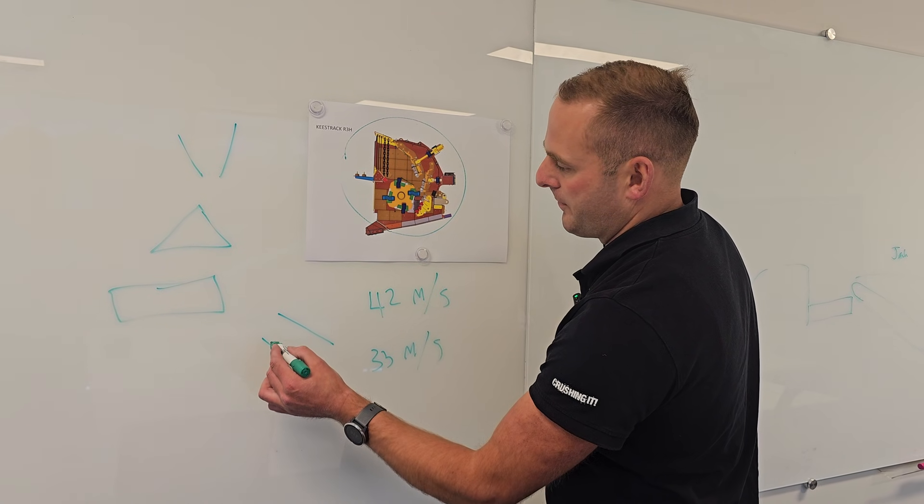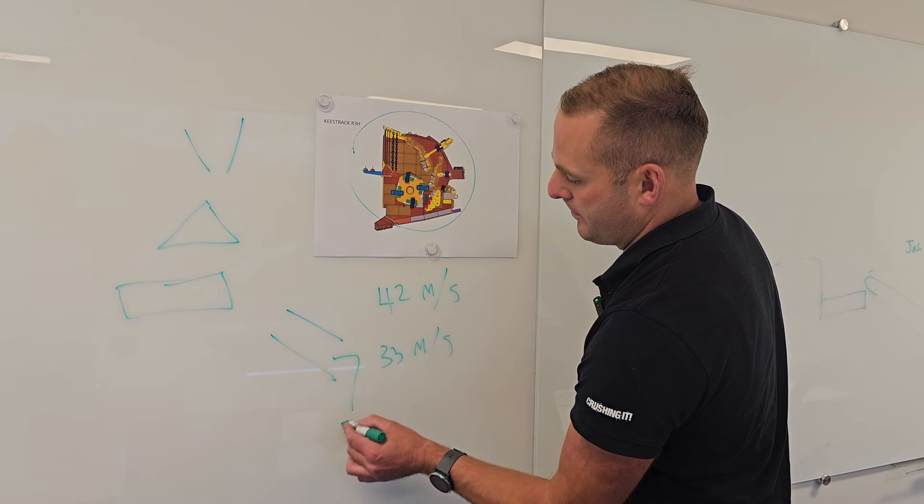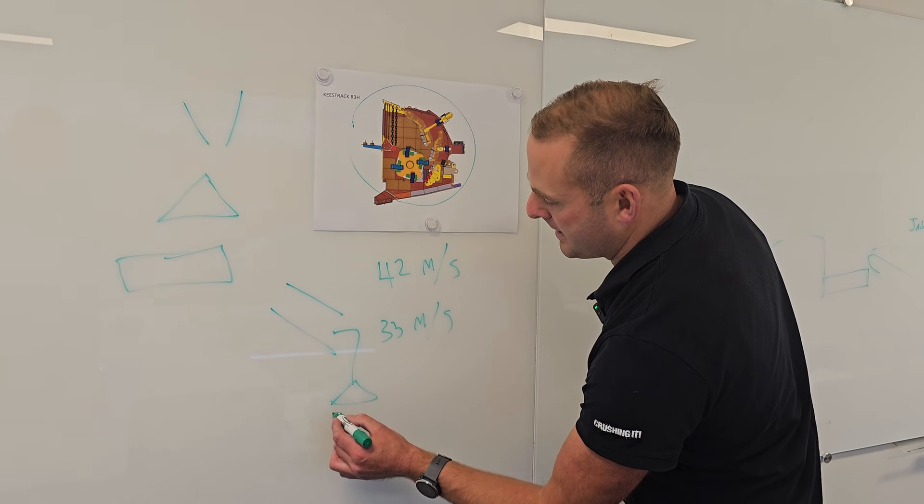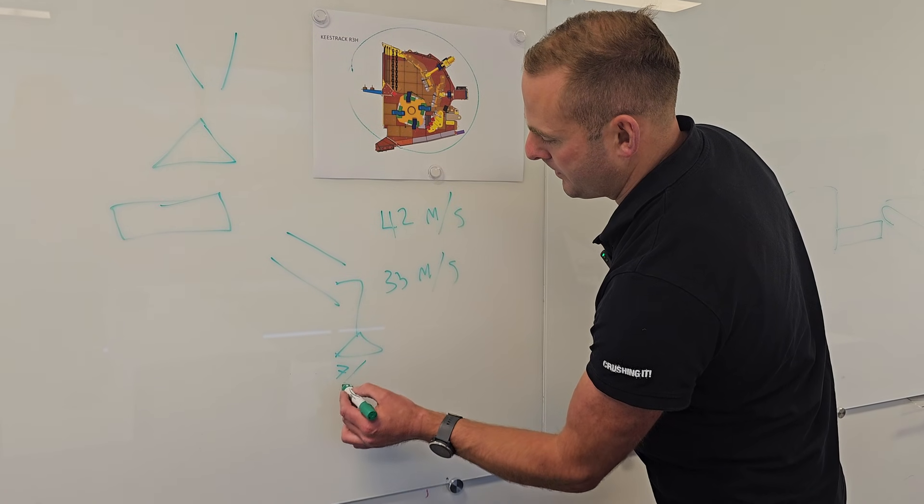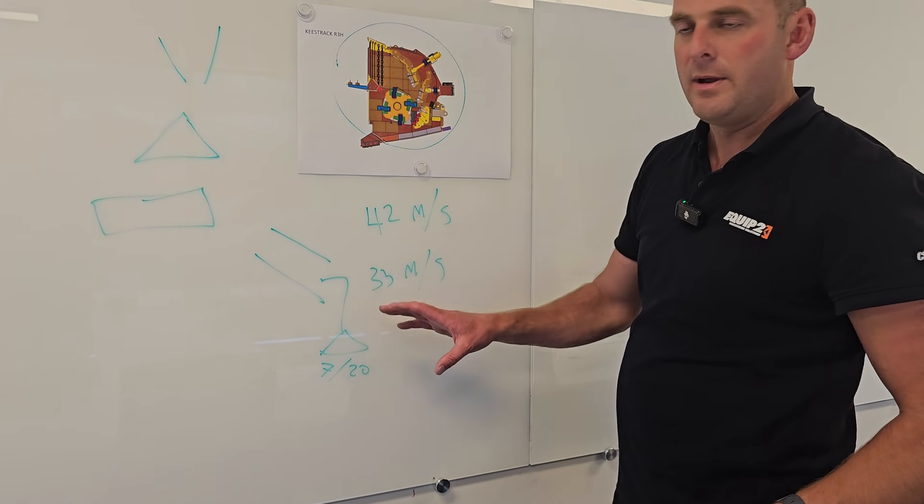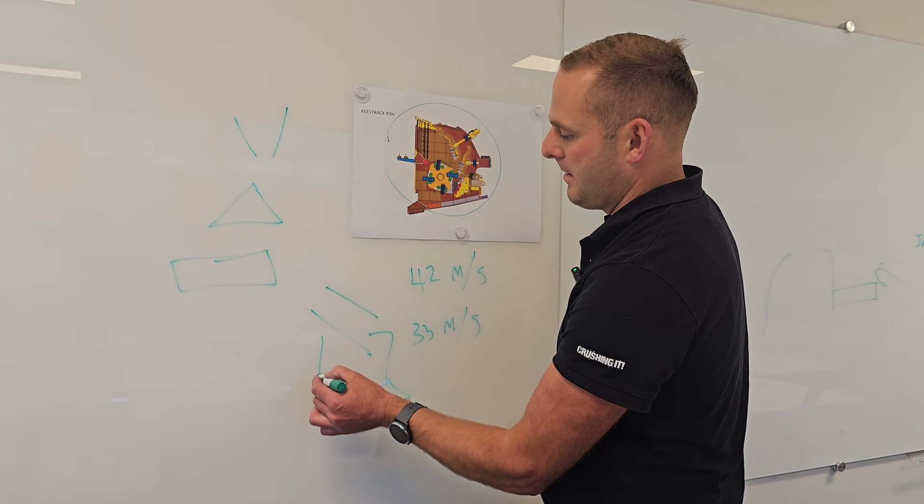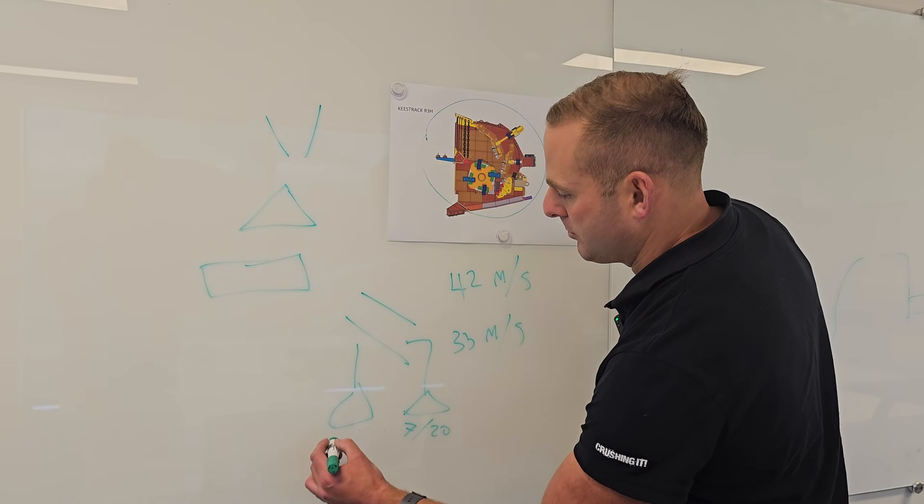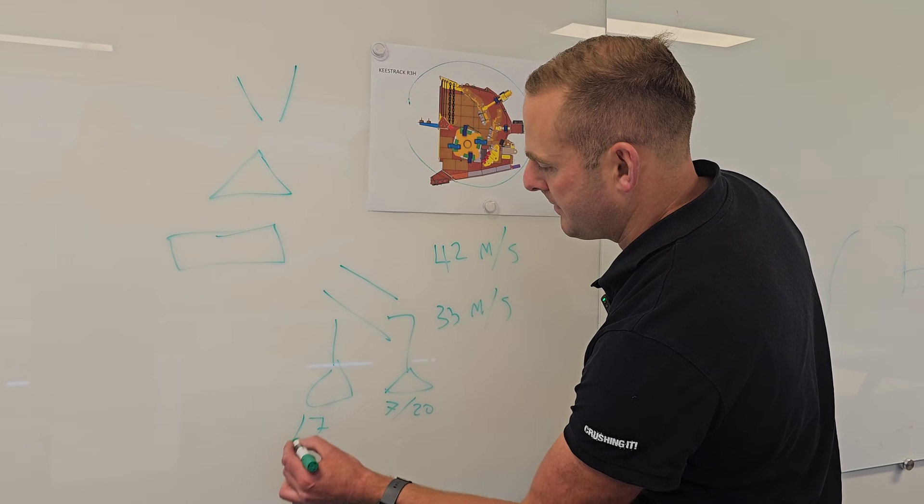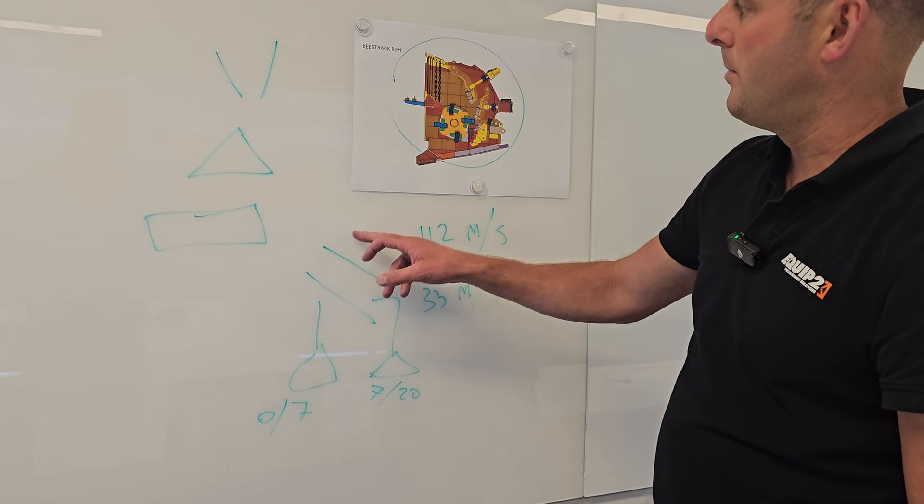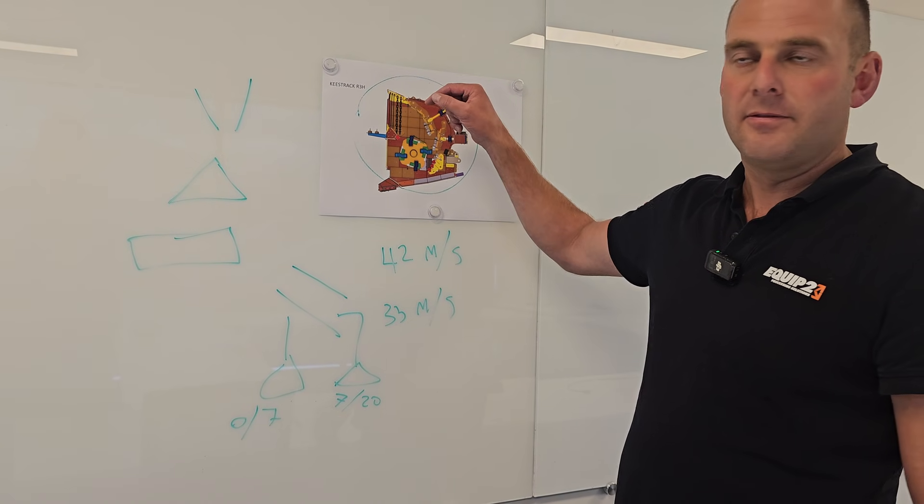So we've got off the mid fraction belt our say 7 to 20 mil fraction and that'll be our chip size. Then off the fines belt will be a PAP 7 or dust, so 0 to 7, and the top is recirculated back to get another hit from the crusher.